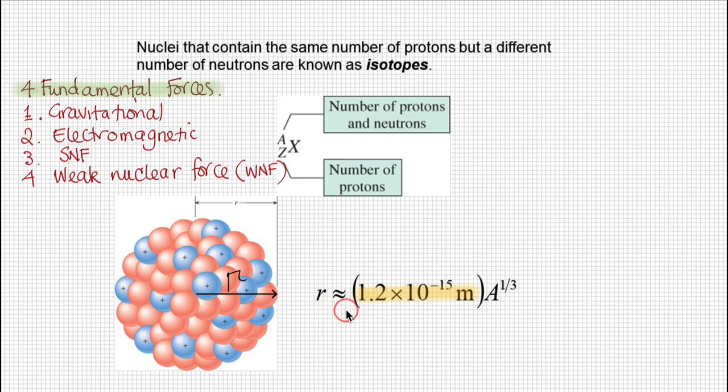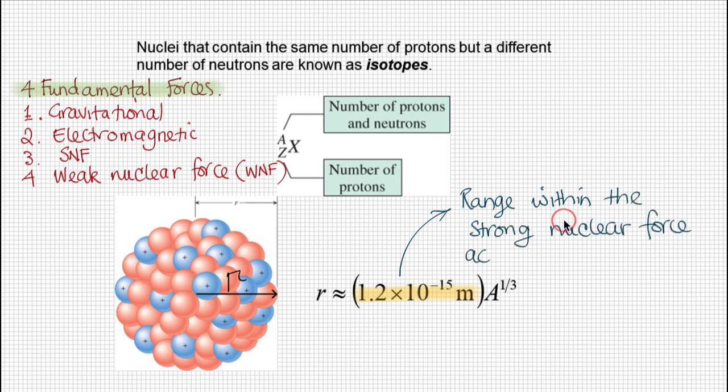When the nucleus radius becomes greater than this, the atom or the nucleus starts to become unstable. This represents roughly the range within which the strong force acts to keep all these nucleons together and to keep the atom stable.